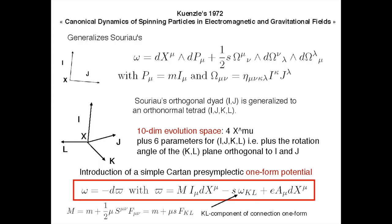Let me discuss what Künzle did in this nice paper. The idea was how to generalize the simple phase space — you have a point for position, a unit vector for the direction of the momentum, and in Souriau's formulation a unit vector for the minimum description of the direction of the spin vector.